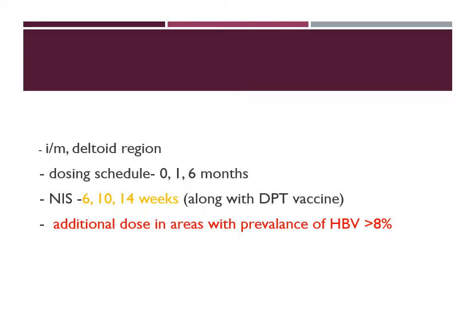In areas where the prevalence of hepatitis B virus infection is more than eight percent — as seen in African countries where the prevalence rate is very high — it is recommended that one additional dose be given, besides the standard three doses.